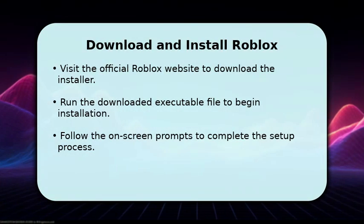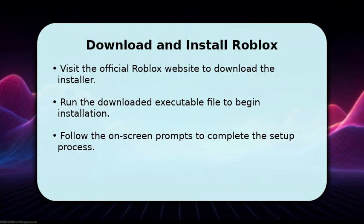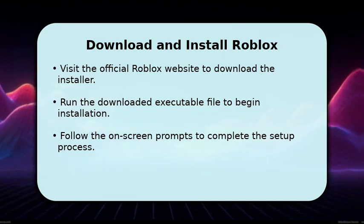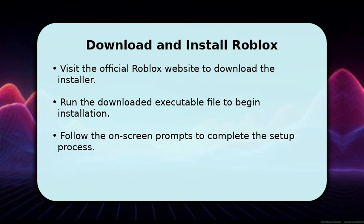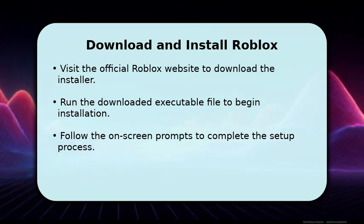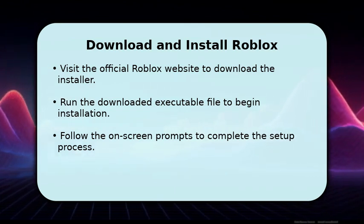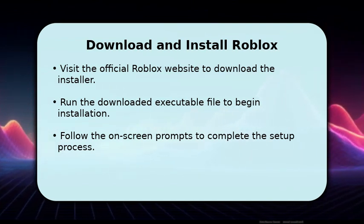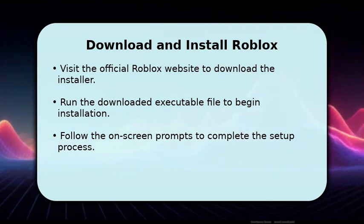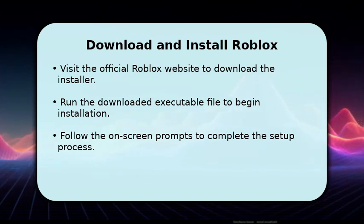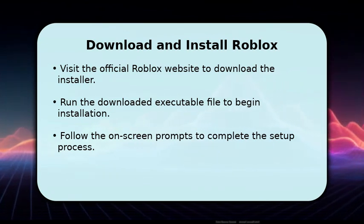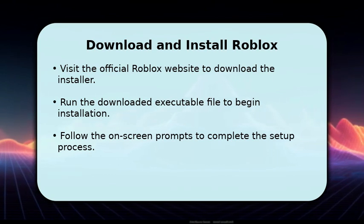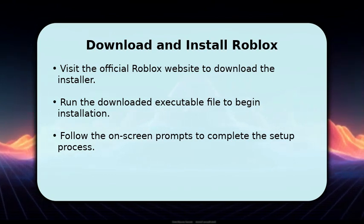To get started, open your web browser and navigate to the official Roblox website. Look for the Download or Play button, which will prompt you to download the Roblox player installer. Once the download is complete, locate the executable file, usually in your Downloads folder, and double-click it. Follow the on-screen instructions to install the game client onto your Windows 7 32-bit system.